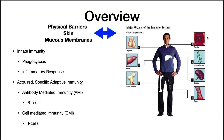Your immune system can be organized into two broad categories: innate immunity, which includes structures that are always present and do not increase significantly with exposure, and acquired immunity, which adapts to the pathogens that challenge it and increases in intensity over time. Innate immunity has two major players: phagocytes and the inflammatory response. Acquired immunity consists of two major branches — antibody-mediated immunity involving B cells, and cell-mediated immunity (CMI) involving T cells.